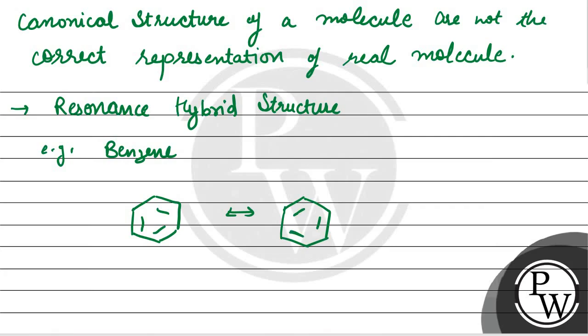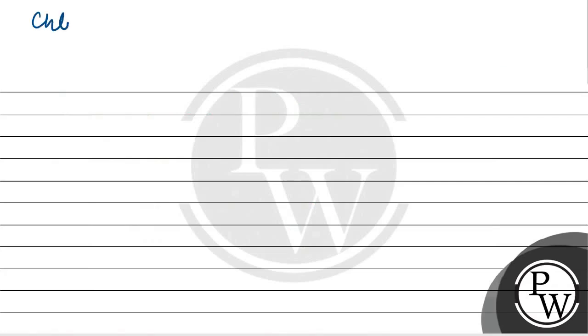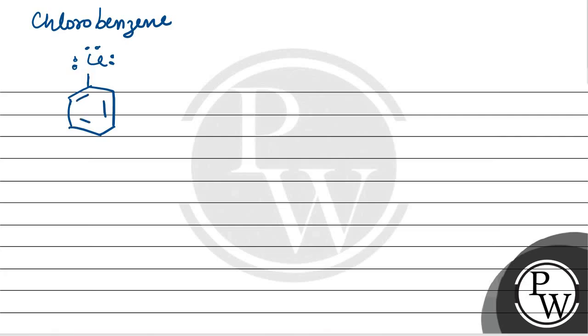We can also use the example of chlorobenzene. For chlorobenzene, we have chlorine, and we can draw the resonance structures. Here we have structure 2 and structure 3, showing the shift in electron density across the ring.